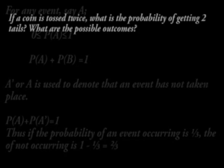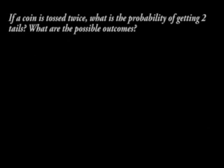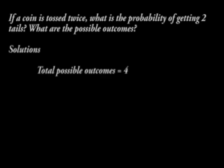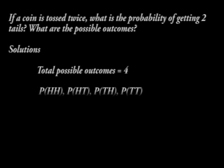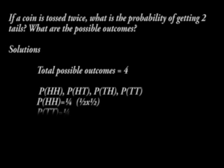For example, if a coin is tossed twice, what are the possible outcomes? In our solution, the total possible outcomes are 4: two heads, head and tail, tail and head, and two tails. The probability in each case is a quarter.